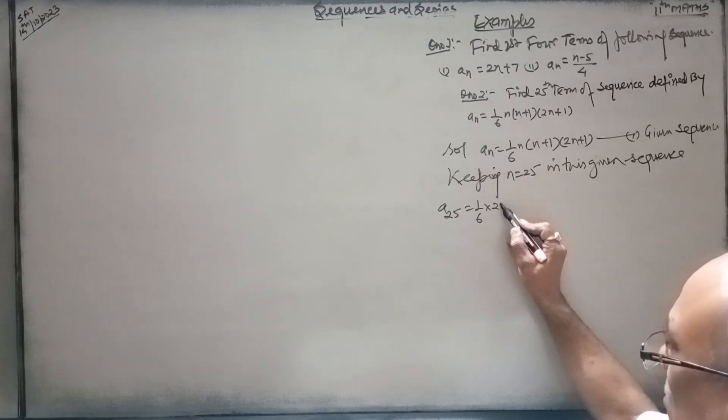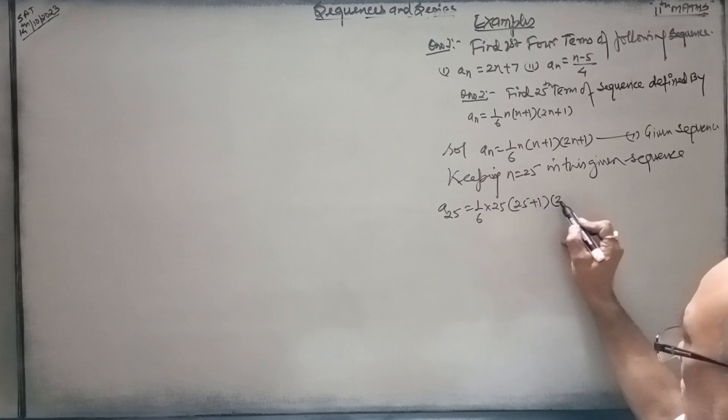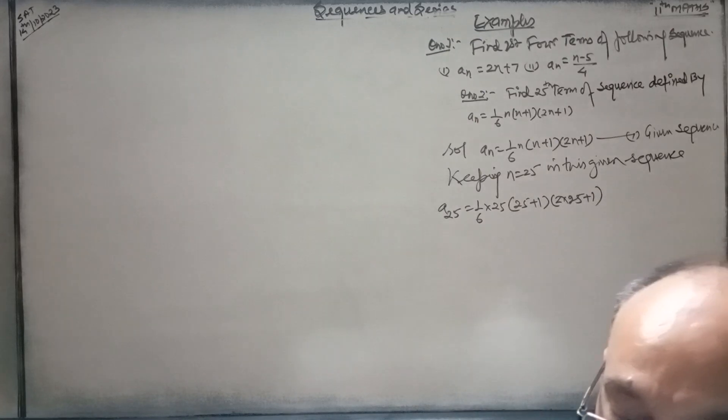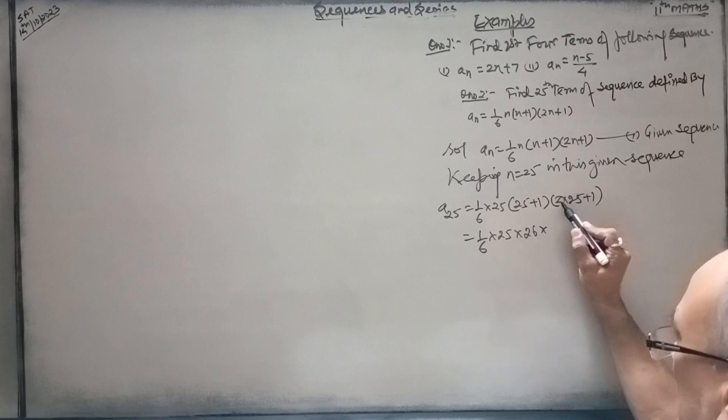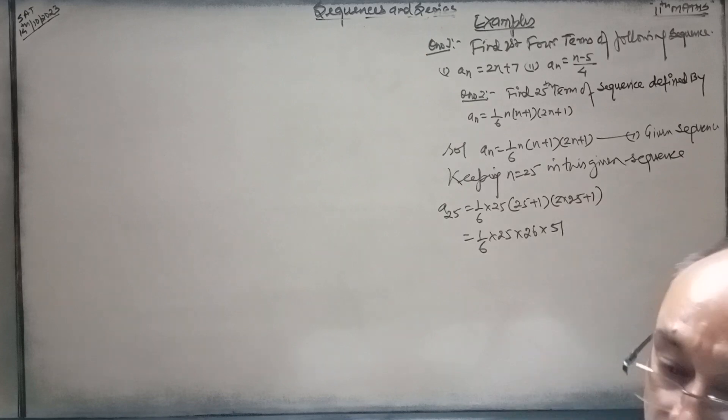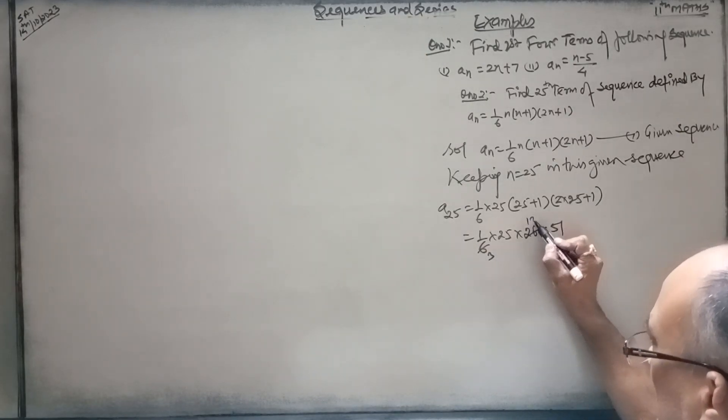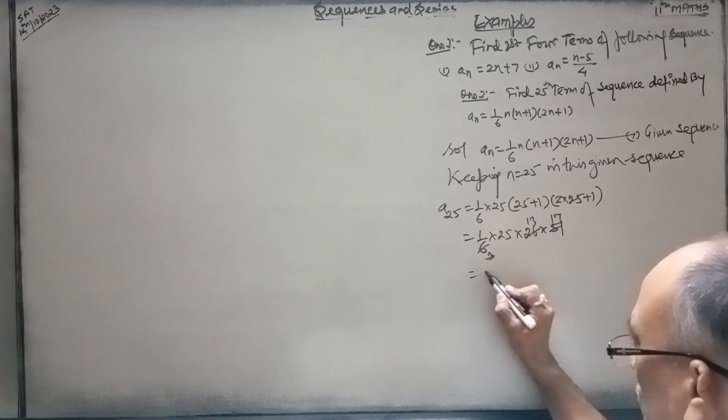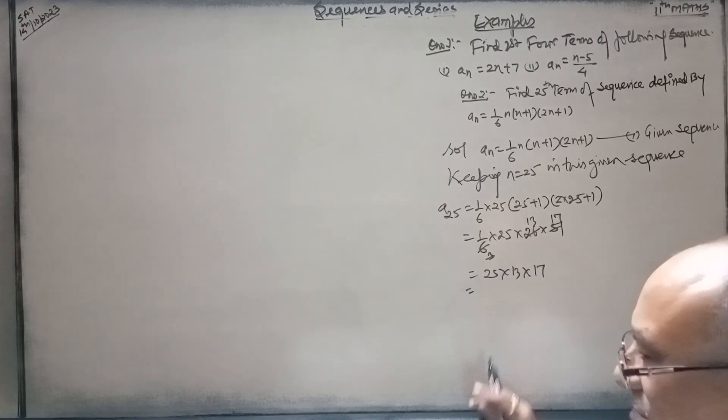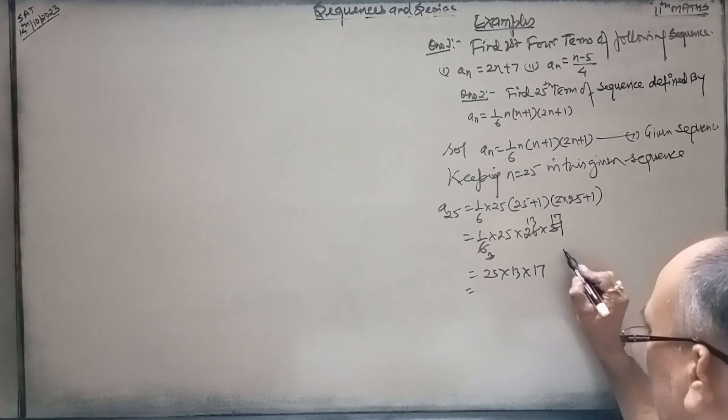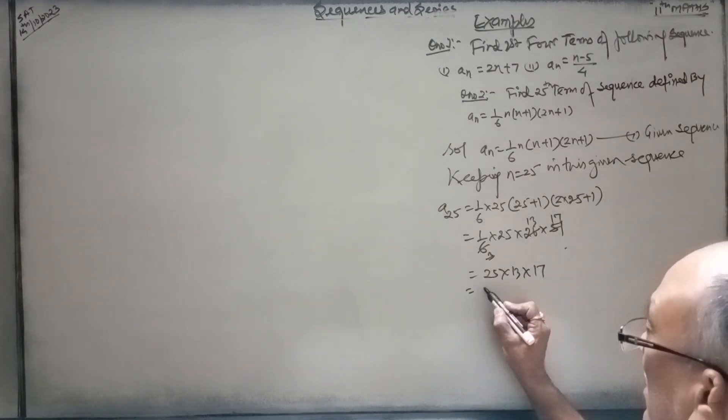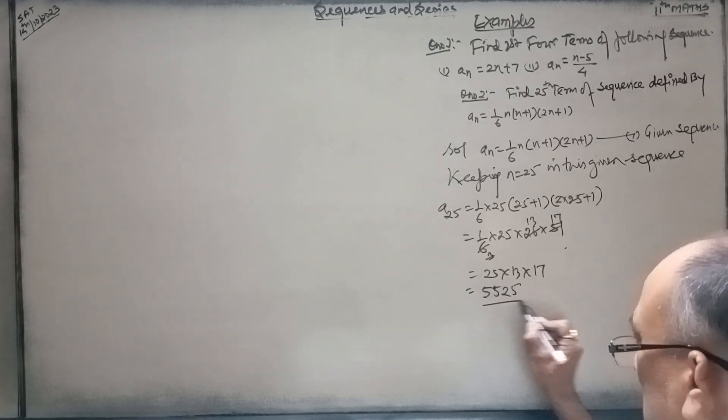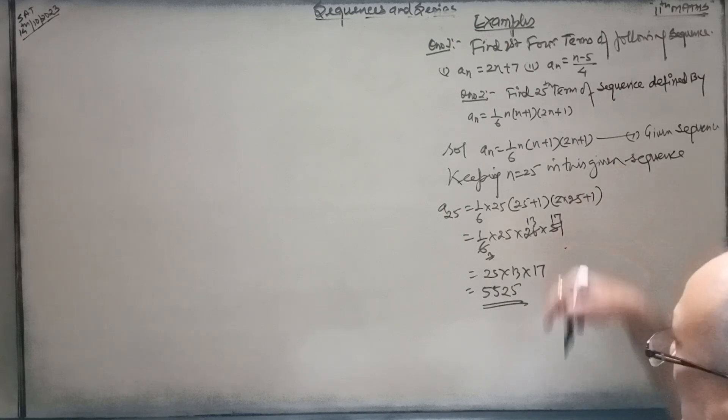1 upon 6 into 25 plus 1, 2 into 25 plus 1. 1 by 6 into 25 into 26 into 51. So this is the 25th term of the given sequence, which is a is equal to 1 by 6 into n plus 1 into 2n plus 1.